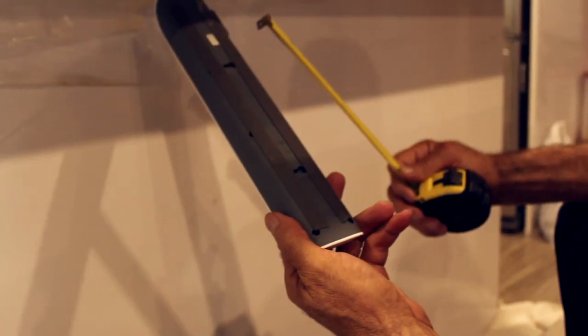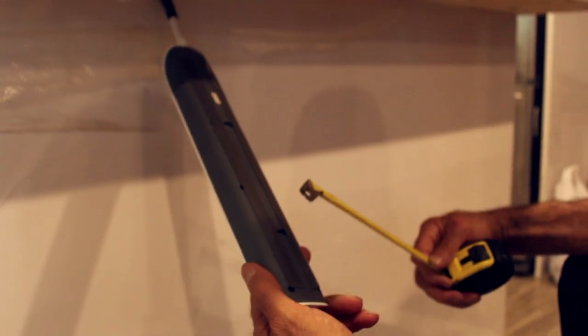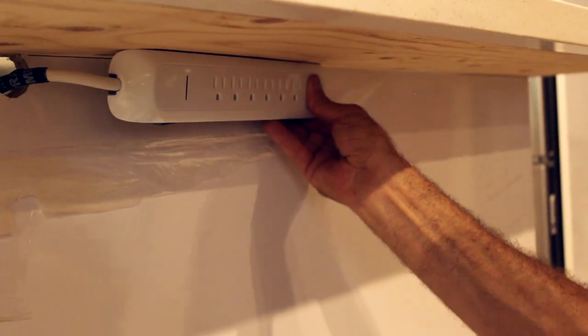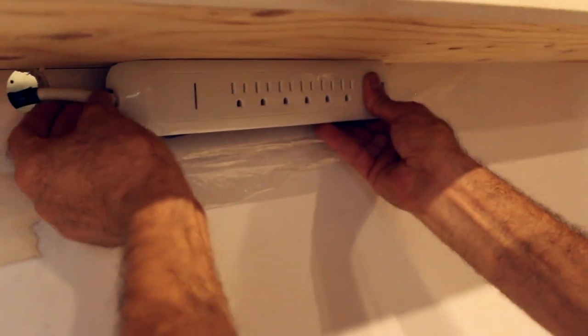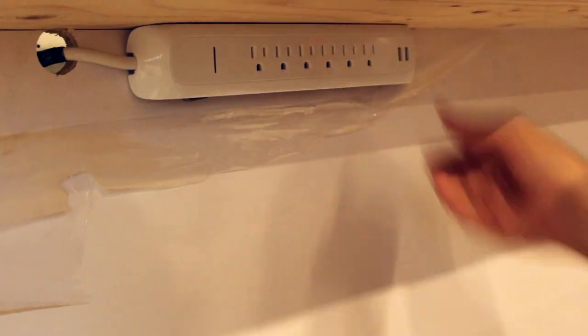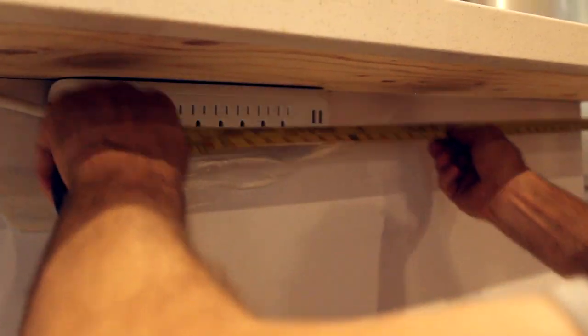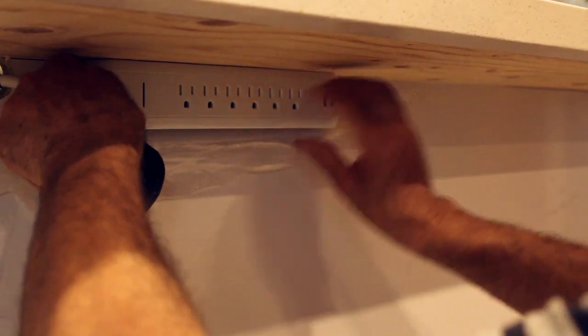We have the double side tape in here, nice and clean to go, right there. Should be right where we want it. Now we just put the tape in here to make sure the wire is tight to the back of the stove.